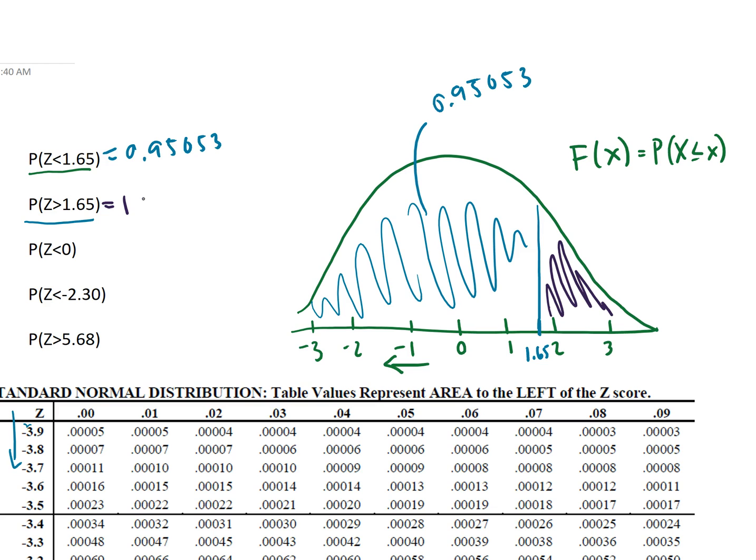So how do we find the upper area of the standard normal distribution? Well we just have to subtract off the lower area because remember all the area under the curve is going to be 1. So 1 minus 0.95053, so this will be the complement, is then equal to 0.04947. And that seems like a reasonable answer or a reasonable proportion for the area that is above 1.65.